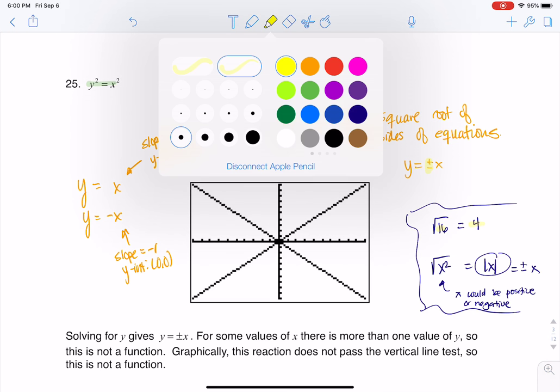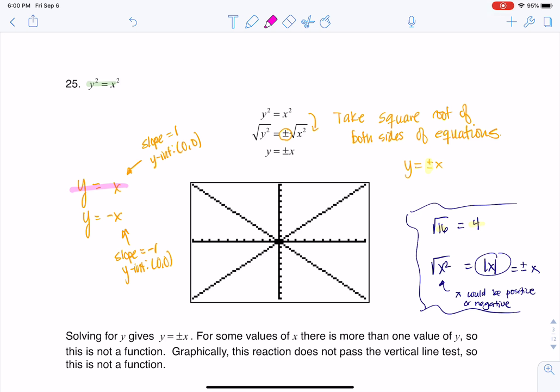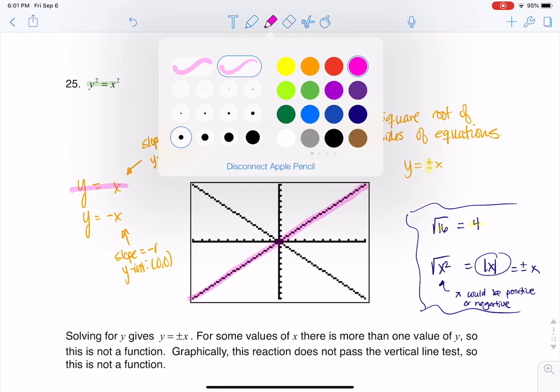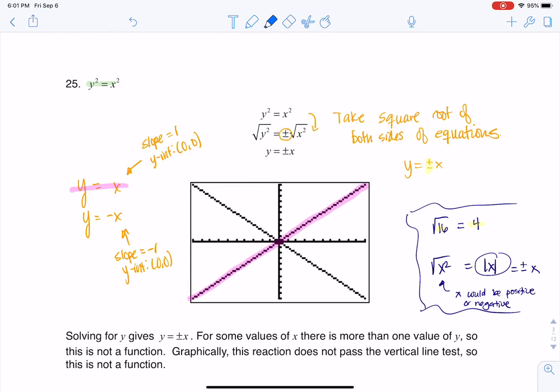So for this first line here, for y equals x, you see me drawing that. All right, and then for that second line, let's use blue, for y equals negative x, here it comes. Wait for it, there we go.